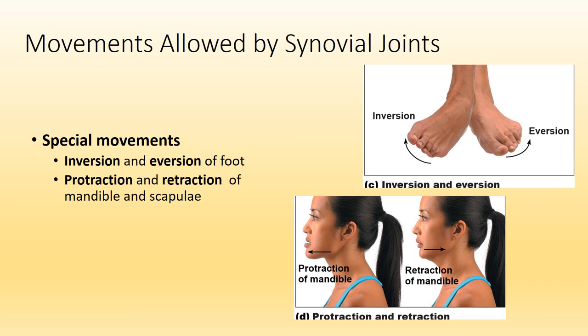Protraction and retraction occur at the mandible or lower jaw as well as the scapula or shoulder blades. Protraction means moving it forward — as you can see in the picture, the girl is jutting her jaw out forward to protract it, and when she brings it back she retracts it. With the scapula, protraction means moving it away from the vertebral column — think about throwing a punch or pushing your arm out in front to protect yourself. Retraction means bringing it back: think about doing a row or squeezing your shoulder blades together as if you had a quarter between them.